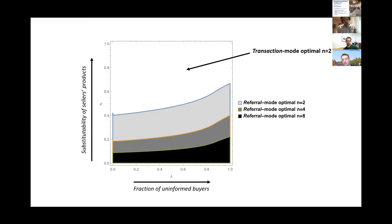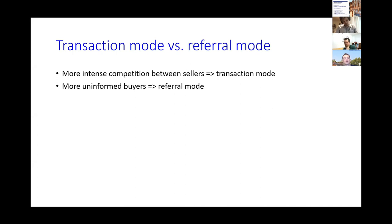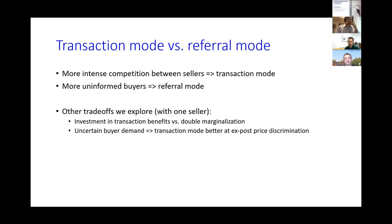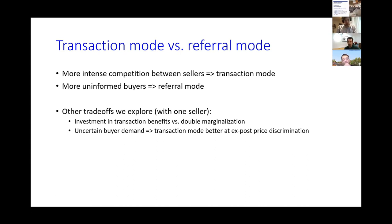Transaction mode is optimal above the line, referral mode is optimal below it. More intense competition between sellers favors the transaction mode; if there are more uninformed buyers, the referral mode becomes more attractive. We also explore other trade-offs: if we allow the marketplace to invest in transaction benefits that helps retain transactions on platform. And if we introduce uncertain buyer demand, the transaction mode dominates further because transaction fees enable better price discrimination over sellers who conduct more transactions.